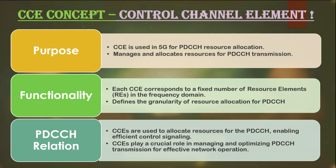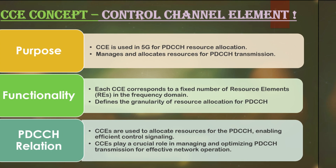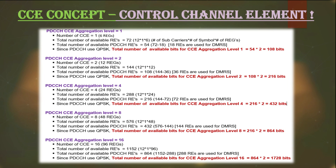In LTE there was no such aggregation, so you can consider there is only one aggregation level or CCE, meaning six RBs in LTE. But in 5G you can have aggregation levels of 1, 2, 4, 8, and 16, with respective RB requirements of 6, 12, 24, 48, and 96 RBs.